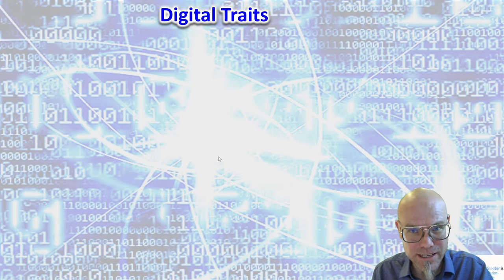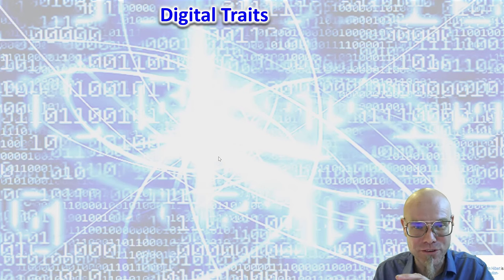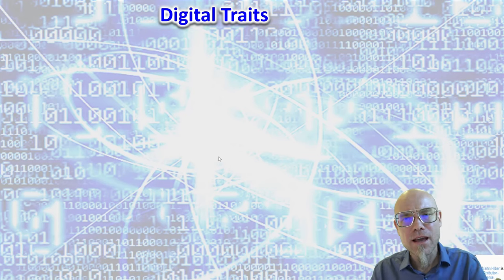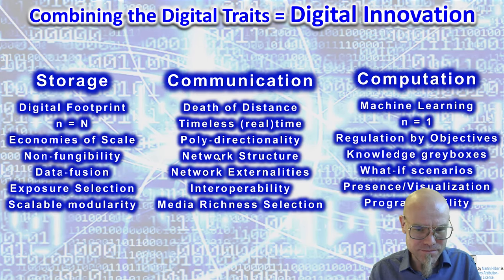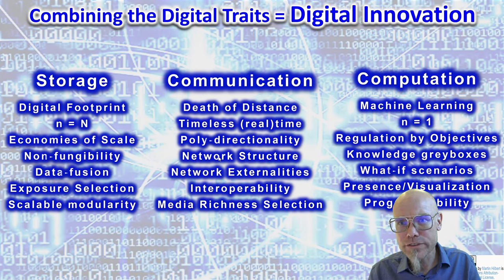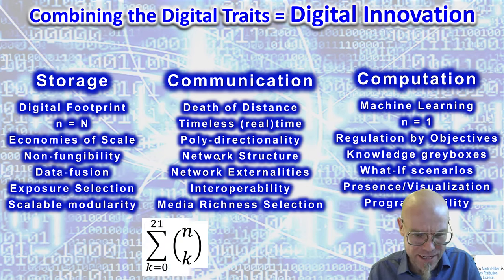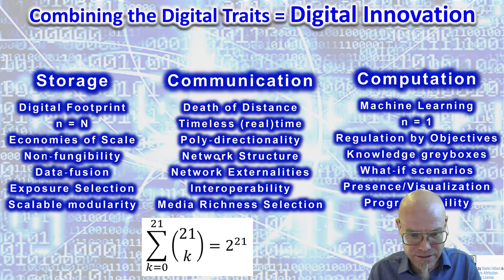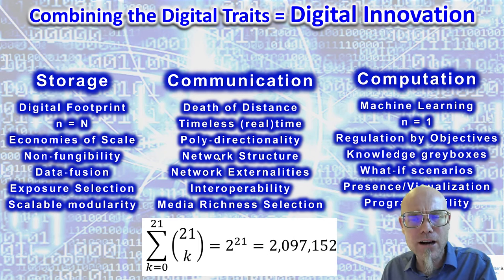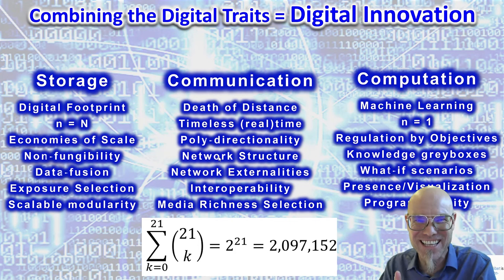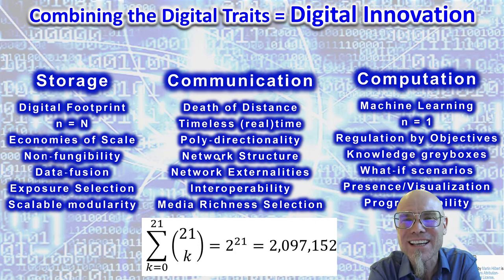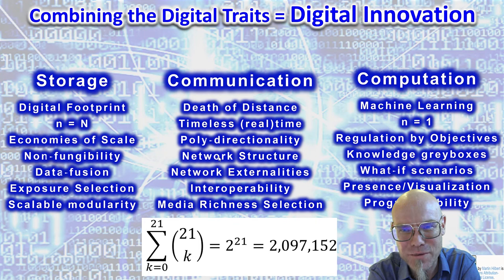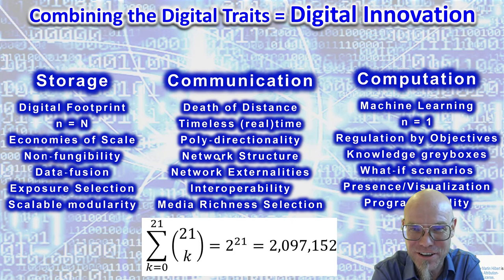What we'll do today is design digital innovations ourselves, and I'm very much looking forward to what you come up with. Here we have our 21 digital trades and we're going to go through possible combinations. N is 21, so the total is 2 to the 21 — about 2 million combinations. We won't go through all 2,100,000 of them — maybe a dozen different ways of looking at it. Then, most importantly, you pick some of them and come up with your own innovations. I'm very much looking forward to that part of today's session.